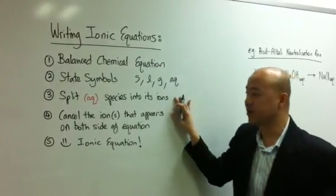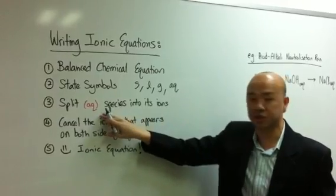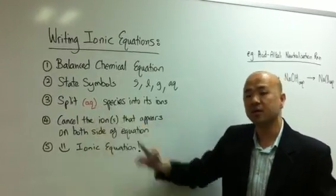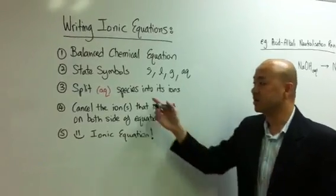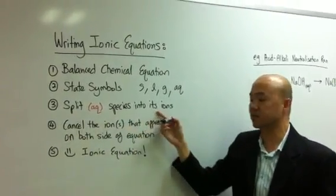Now, in step three, you then choose the aqueous species. As you can see right here, those reactants or products that are in aqueous states, what you do is you split them into its ions.